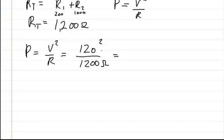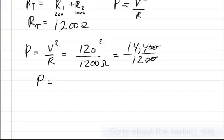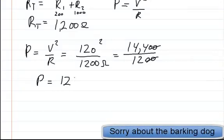This would be, well, 12 squared is 144, so we're going to have 14,400 volts divided by 1200 ohms. These two cancel out, so it's just 144 divided by 12, which the power is equal to 12 watts.